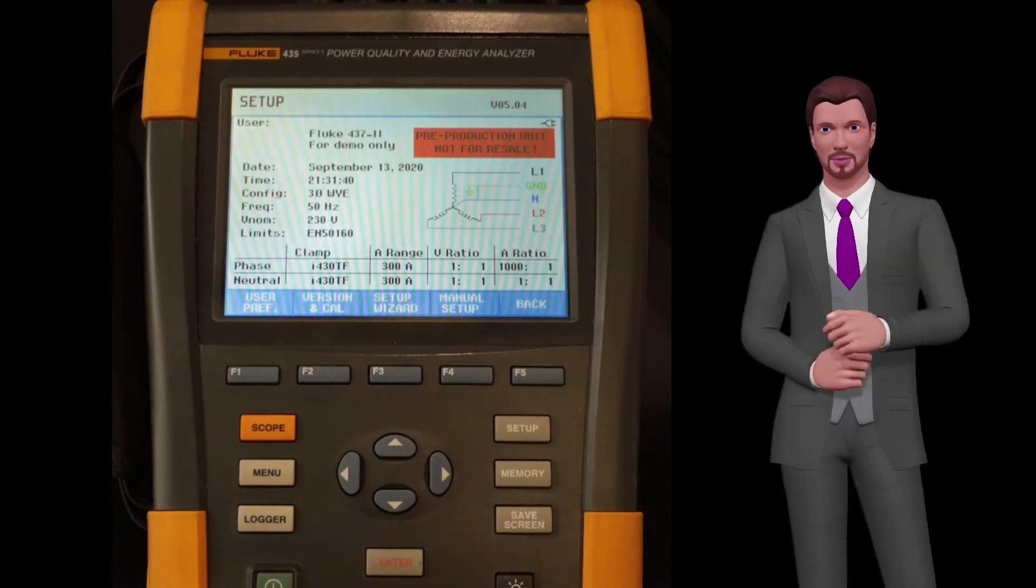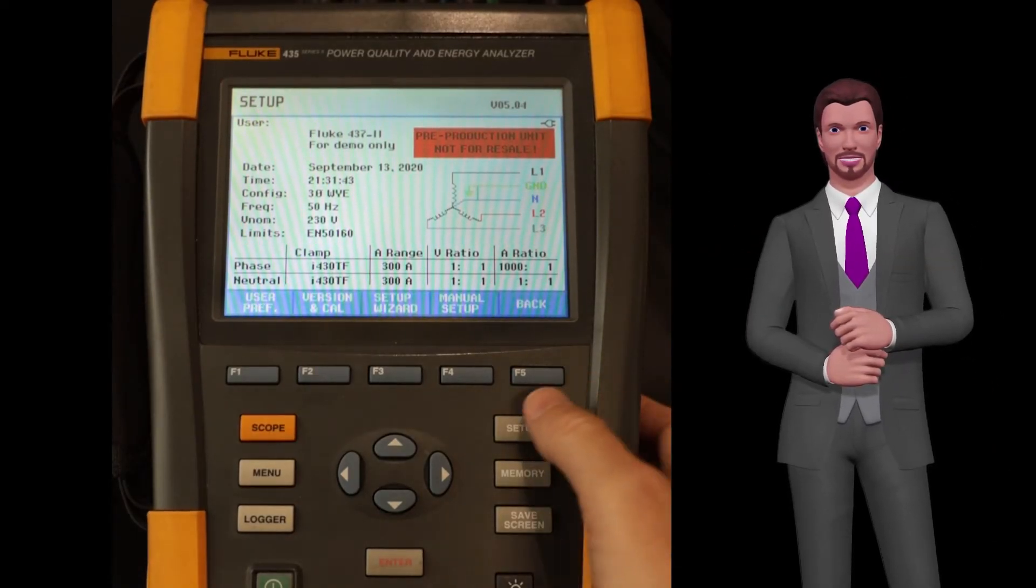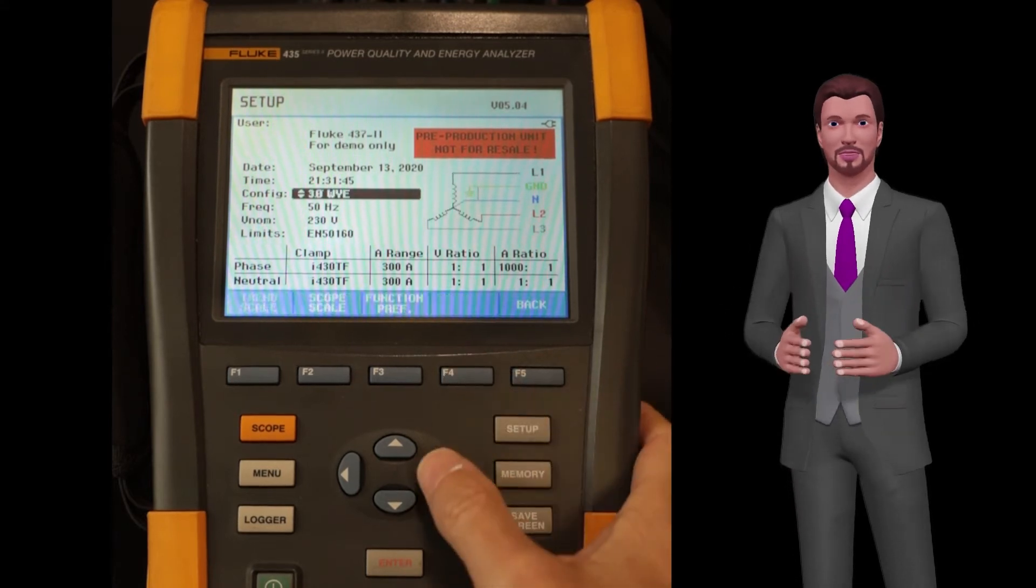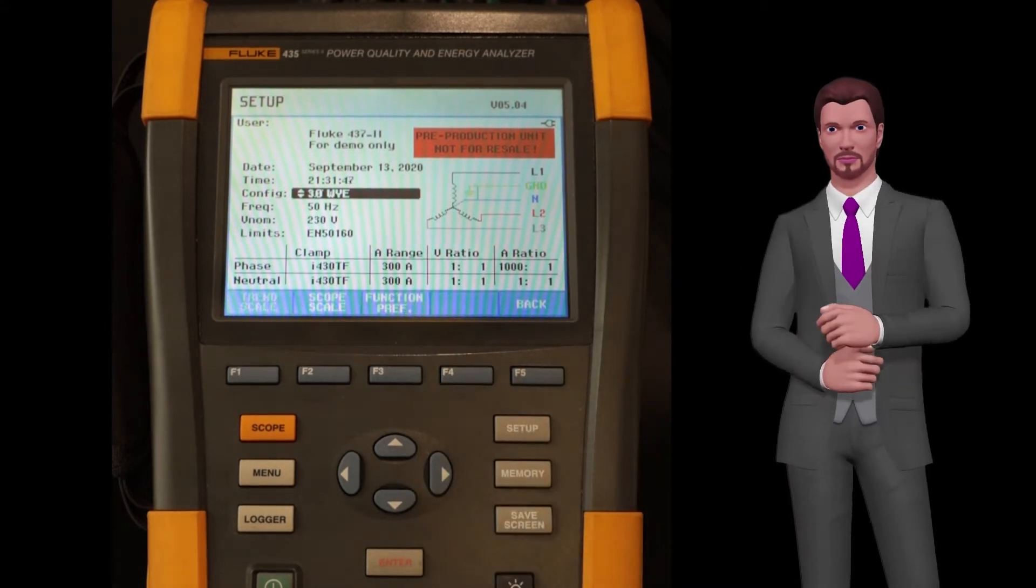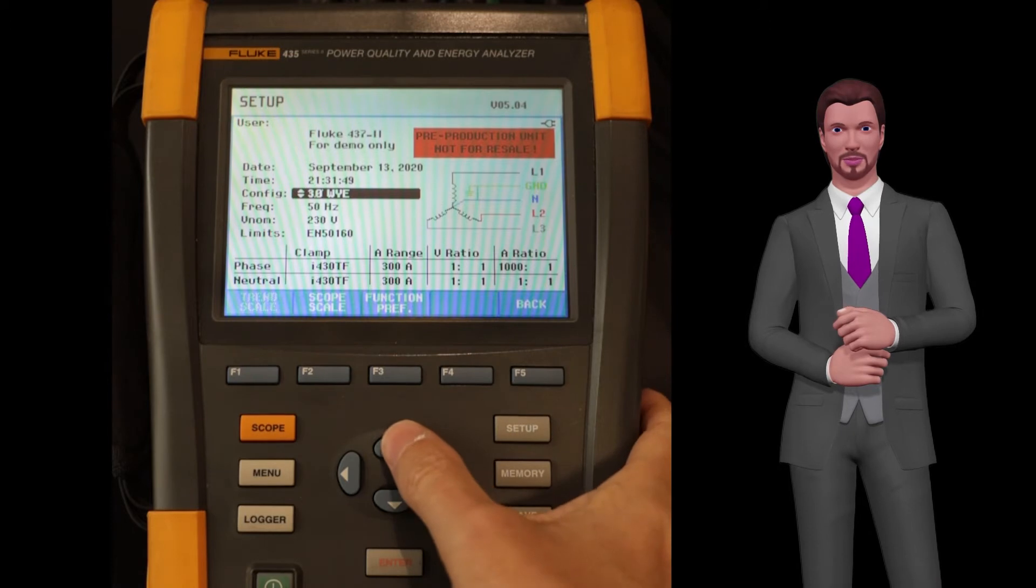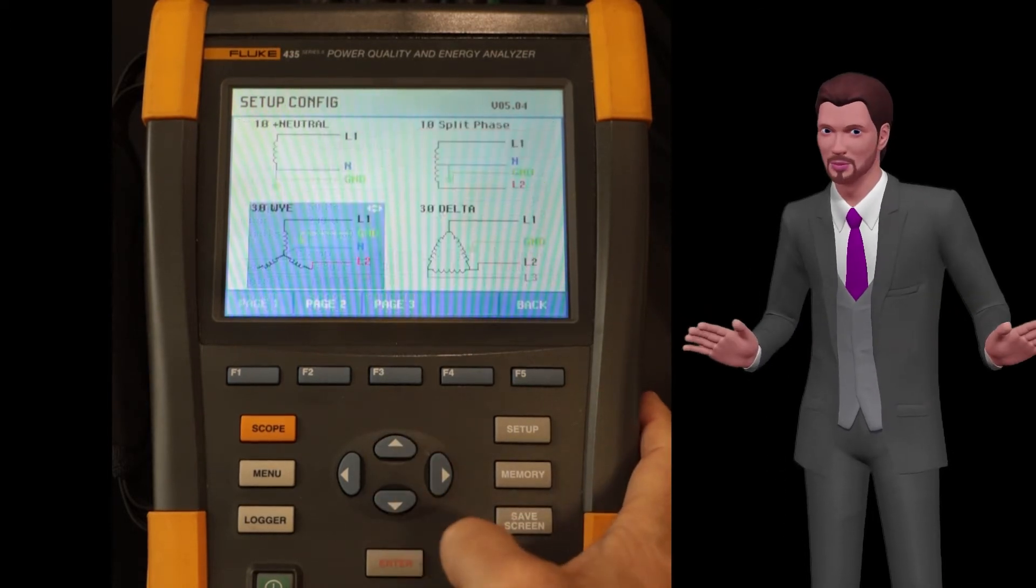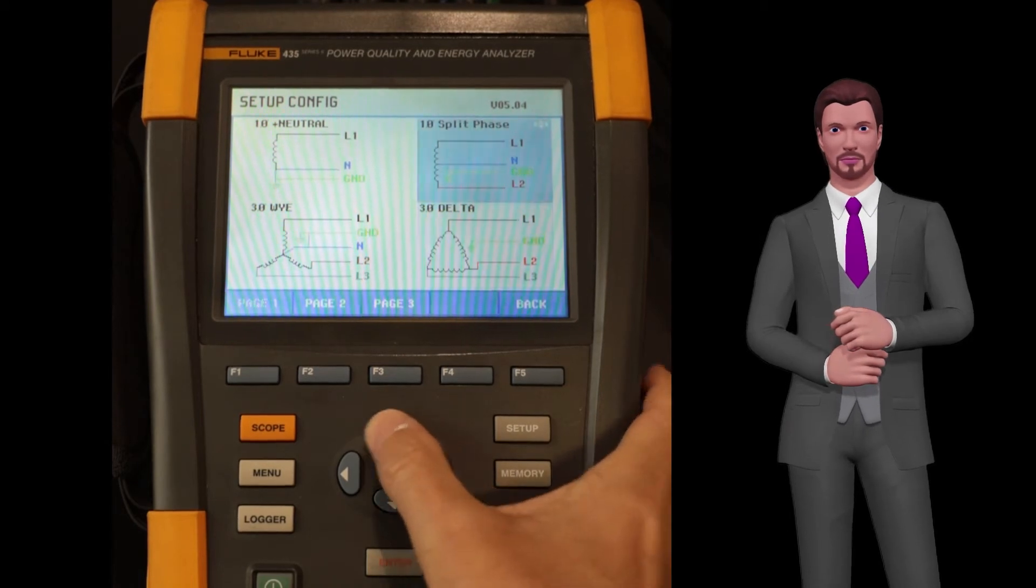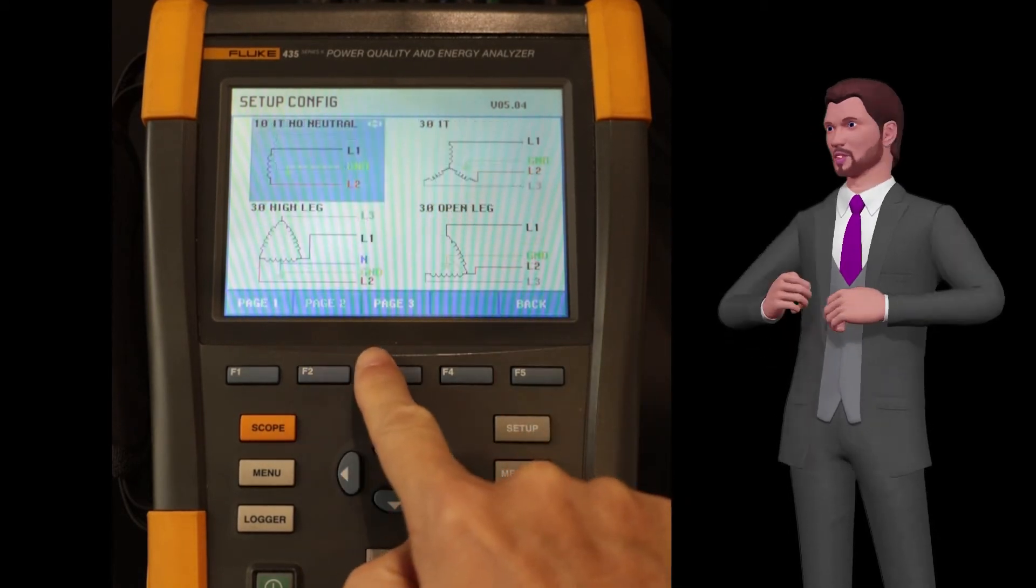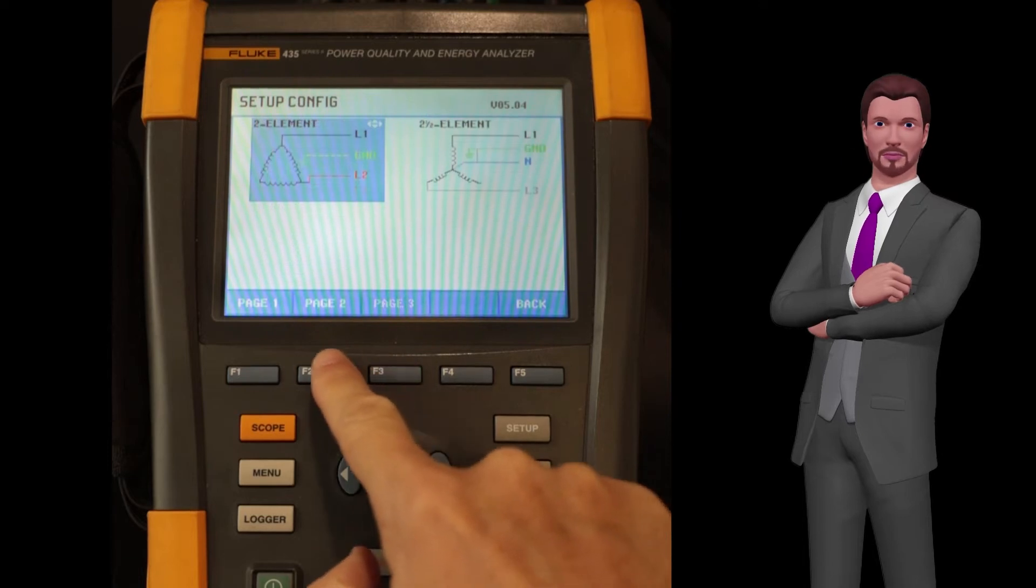Now, we can go on to configure the topology of the electrical system in which we are going to install the analyzer to measure and record data. Press the enter key once the config option is highlighted, and a screen will open with a series of figures representing different electrical systems. The F1, F2 and F3 keys will allow us to navigate between three different pages.